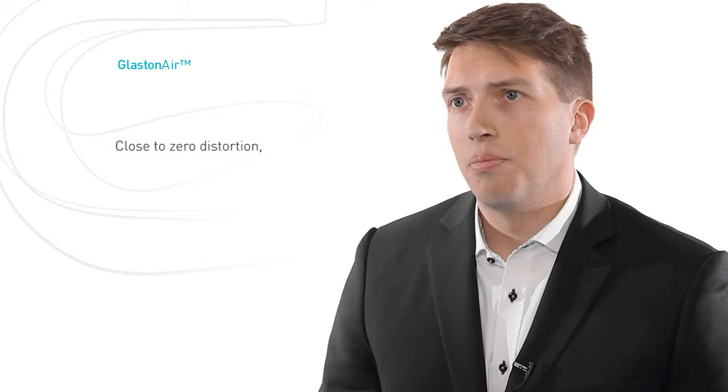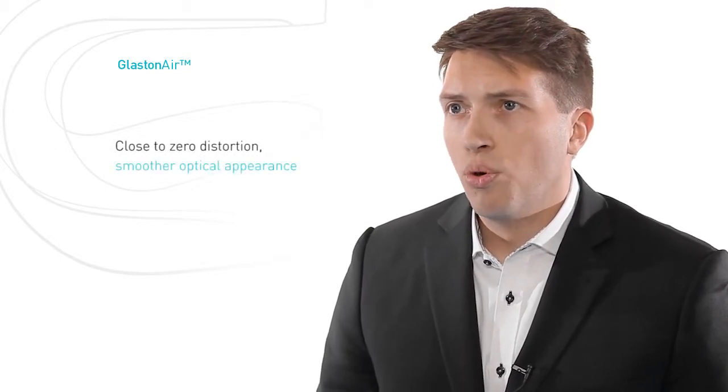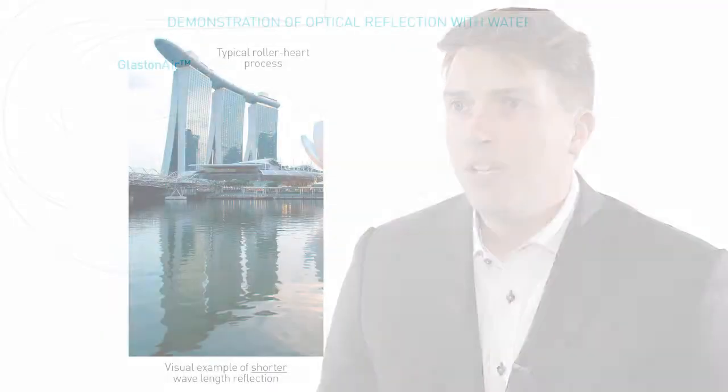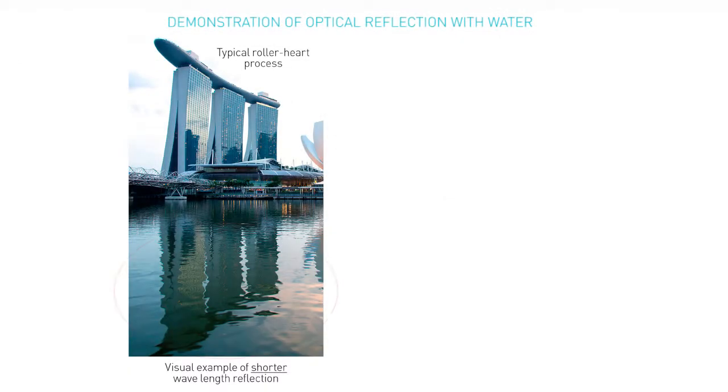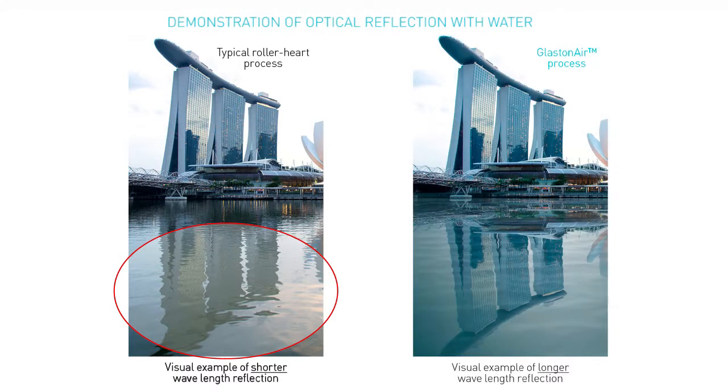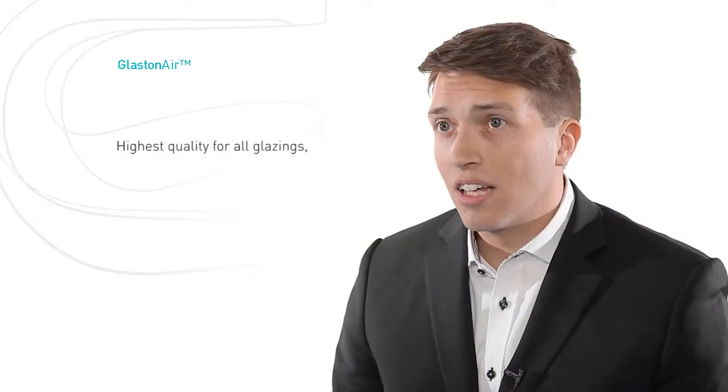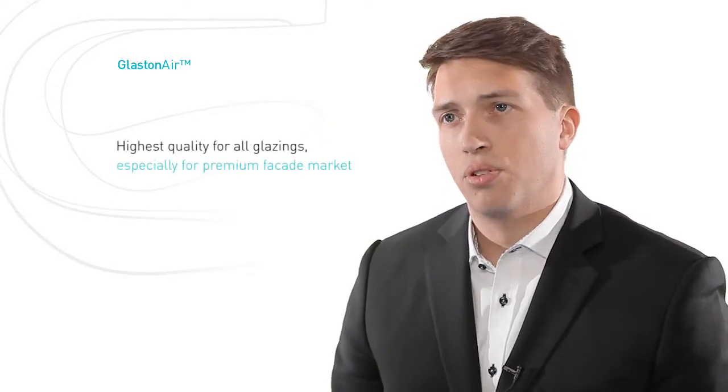The slight distortion that can be found has a smoother optical appearance than normal tempered glass. The optical smoothness is created by a different shape of distortion. With Glastonair, the little distortion has longer wavelength, which creates a much better optical reflection. This means significant improvements to all tempered glass applications where glass quality is of utmost importance.